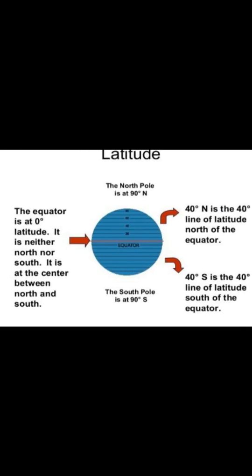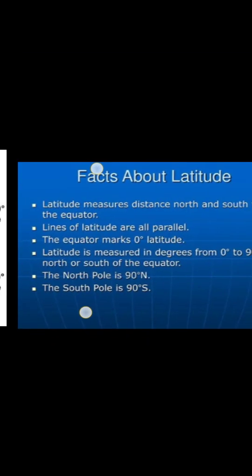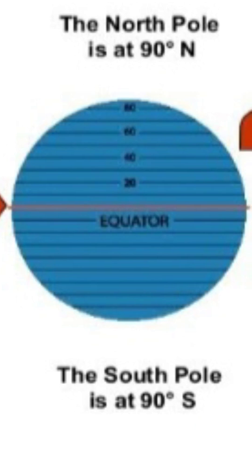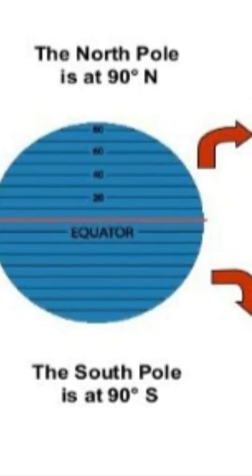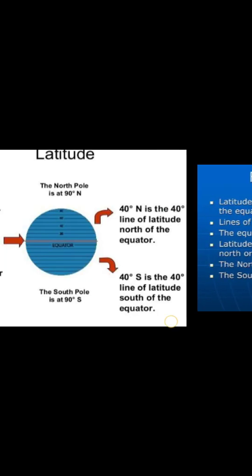These lines are actually parallel to each other — they run parallel, meaning the lines go parallel to each other. You can see the upper side and lower side, the northern side or southern side of the equator. These are the important lines of latitude.